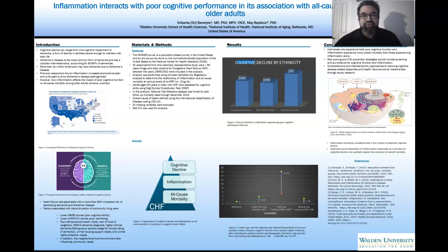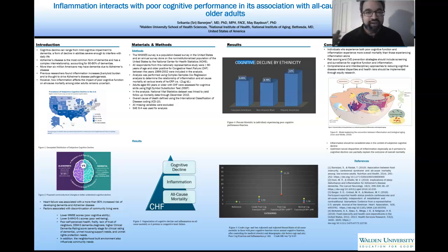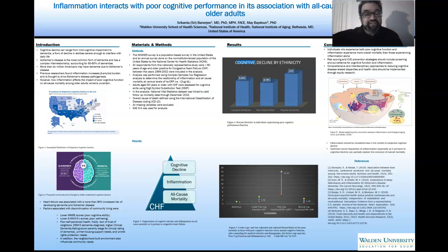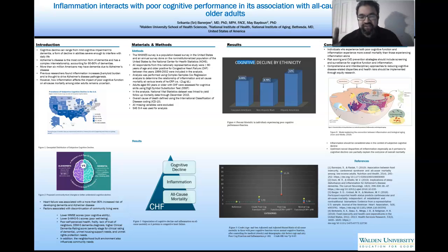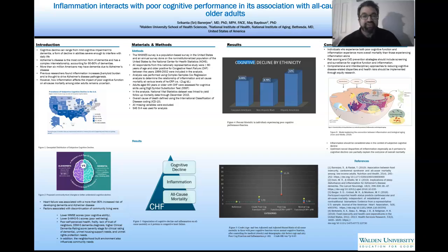Individuals with congestive heart failure who were greater than or equal to 60 years of age were included in the sample, and they were followed up through December 2015. We looked at how inflammation played a role in making differences in mortality, and how cognitive decline potentially modified that effect. The main result is that individuals with poor cognitive function and increased C-reactive protein were in fact more likely to experience mortality than individuals with normal cognitive function and increased C-reactive protein.